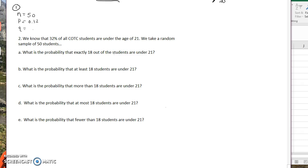Next, q, well it's 1 minus p, so it's 1 minus 0.32, so I get 0.68. Alright, so that first step is identify n, p, and q because that's what we need for most of our binomial stuff.